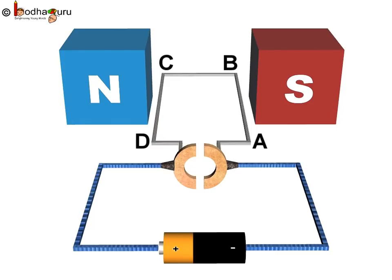You know, a device that reverses the direction of flow of current through a circuit is called a commutator. So, you can say in electric motors, the split ring acts as a commutator. So, now you must have understood the use of split ring.